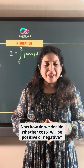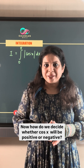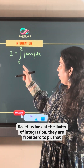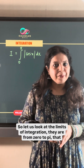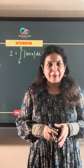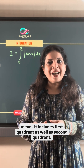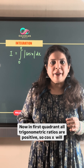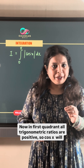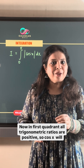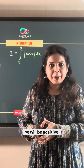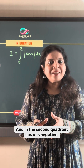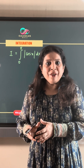Now, how do we decide whether cos x will be positive or negative? Let us look at the limits of integration. They are from 0 to pi, which means it includes the first quadrant as well as the second quadrant. In the first quadrant, all trigonometric ratios are positive, so cos x will be positive. And in the second quadrant, cos x is negative.